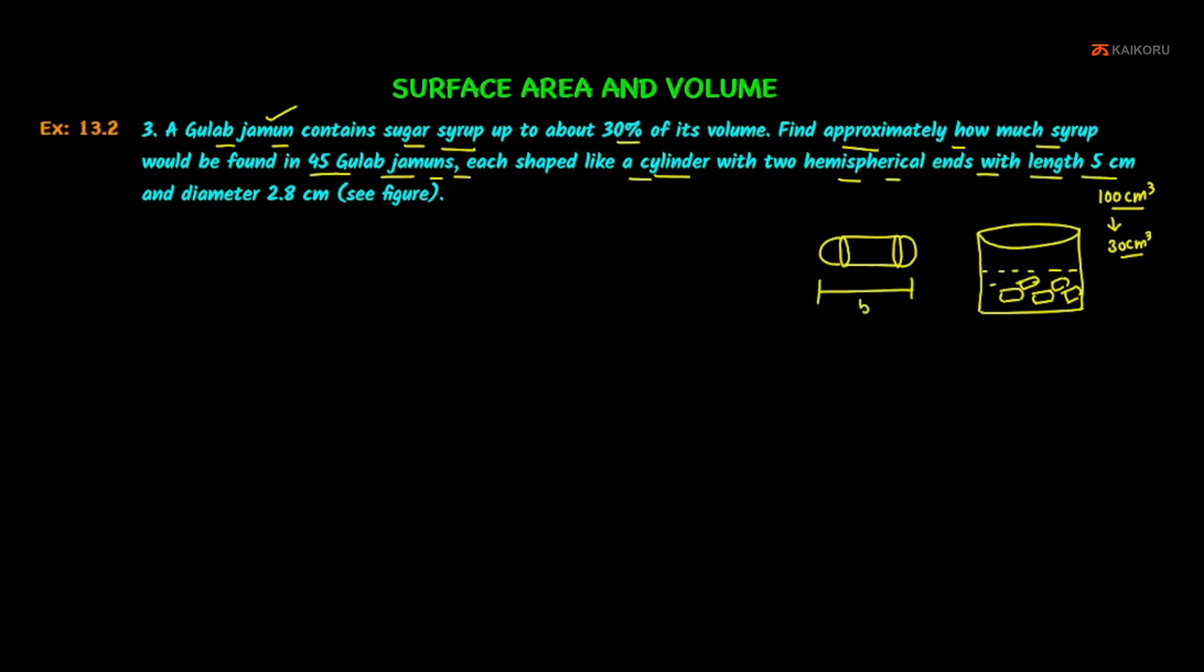The diameter is 2.8 cm. The radius of the hemisphere is 2.8 divided by 2, which equals 1.4 cm. So this radius is 1.4 cm and this is 1.4 cm. This is the height of the cylinder.